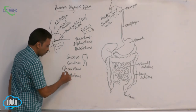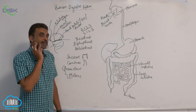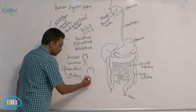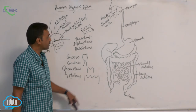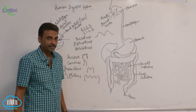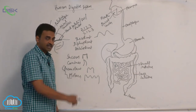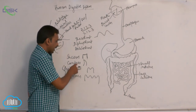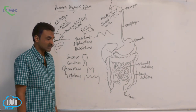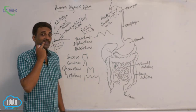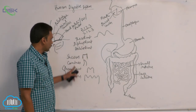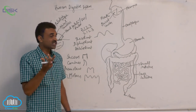Premolars and molars are called cheek teeth because they are present in the cheek region and they have cusps — raised, pointed elevations. They are useful for grinding food into pieces. Canines have a single cusp, so they are called monocuspids. Premolars have two cusps, so they are called bicuspids. Molars have four or five cusps — maxillary molars have four cusps and mandibular molars have five cusps. Four different types of teeth are present; this specialized dentition is called heterodont dentition.